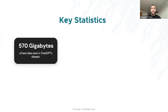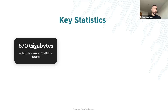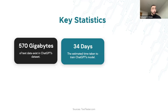Before we dive in, let's take a step back and explore some key statistics about ChatGPT. ChatGPT's dataset contains 570 gigabytes of text data spanning a wide range of topics and domains. The sheer volume and variety of data have equipped the model with an extensive knowledge base, enabling it to generate contextually relevant responses across various contexts and industries.